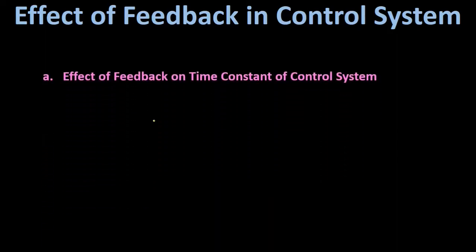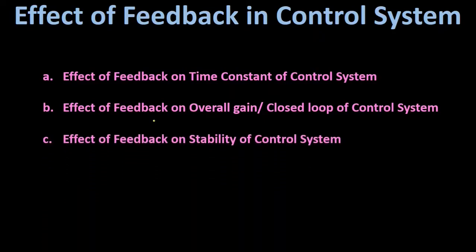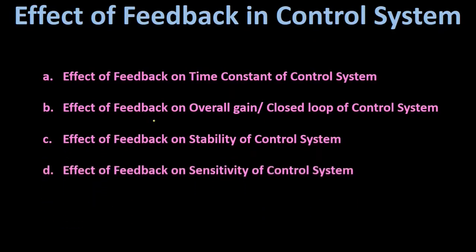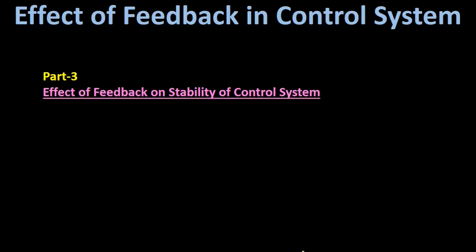This is the lecture series on Effect of Feedback in Control System. The effect of feedback is divided into 5 parts: Effect on Time Constant, Effect on Overall Gain or Close-Loop Gain, Effect on Stability, Effect on Sensitivity, and Effect on Disturbance. In this lecture, we are going to discuss the Effect of Feedback on Stability of Control System.